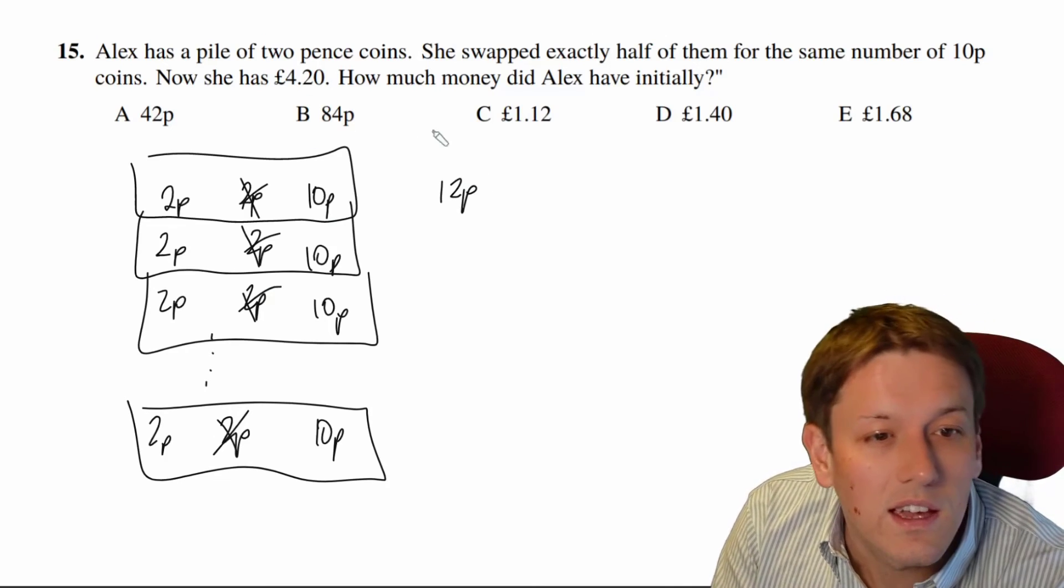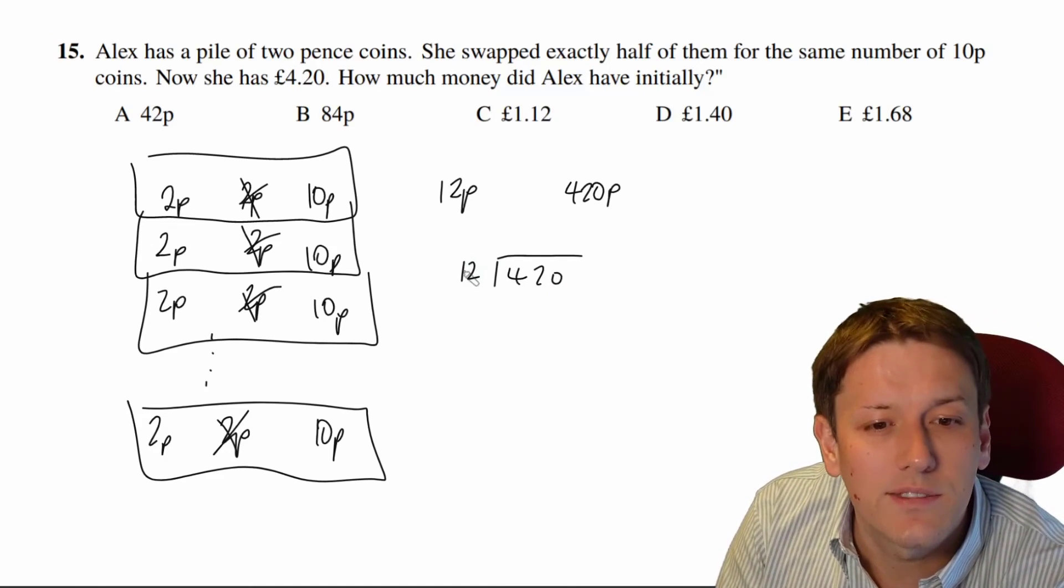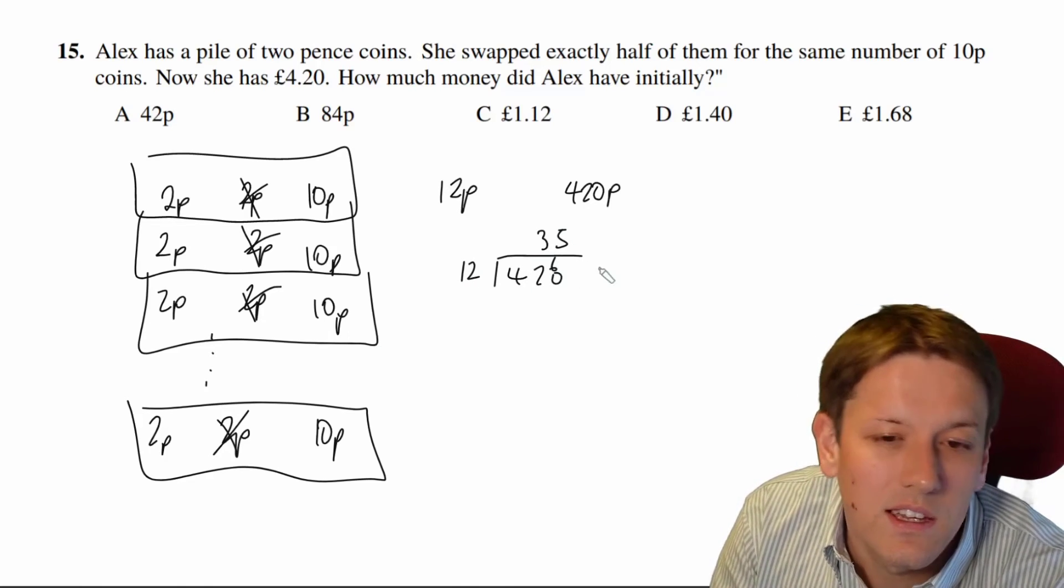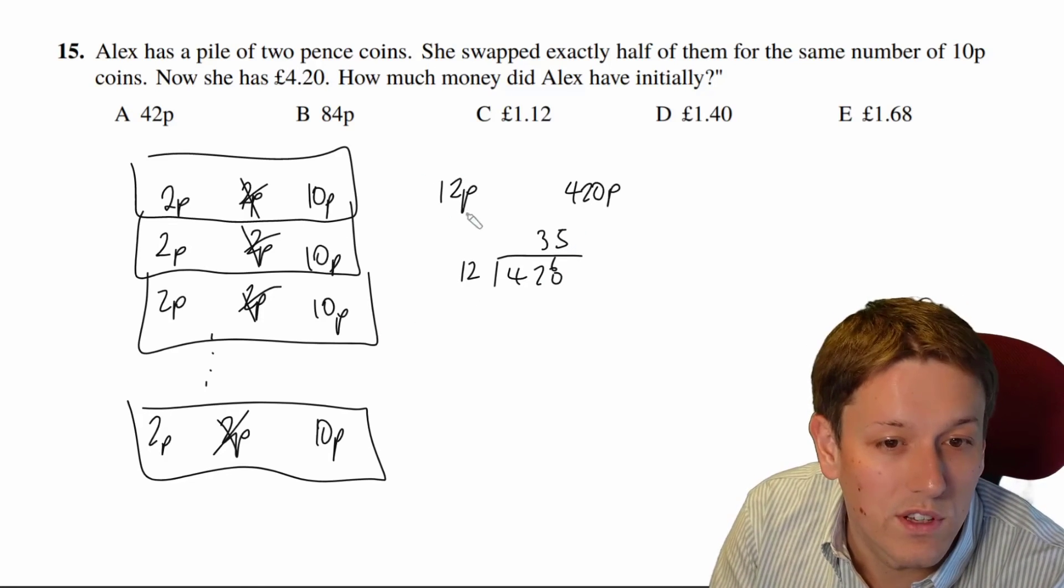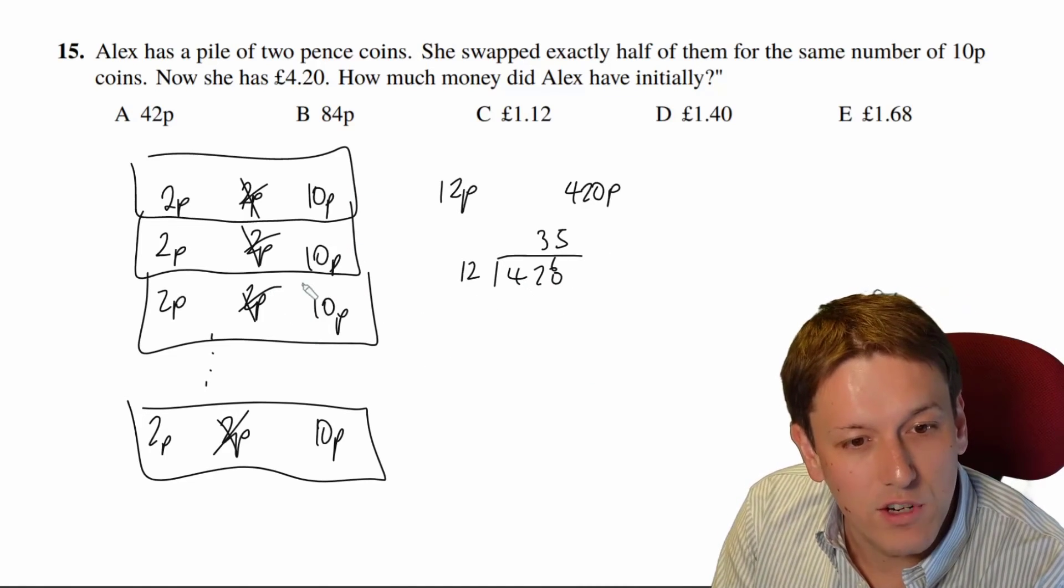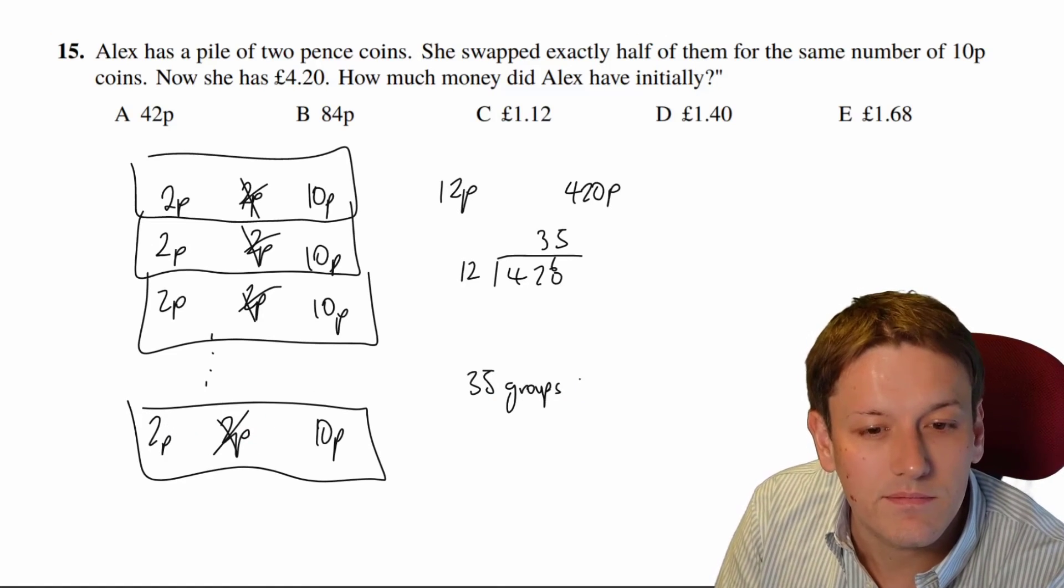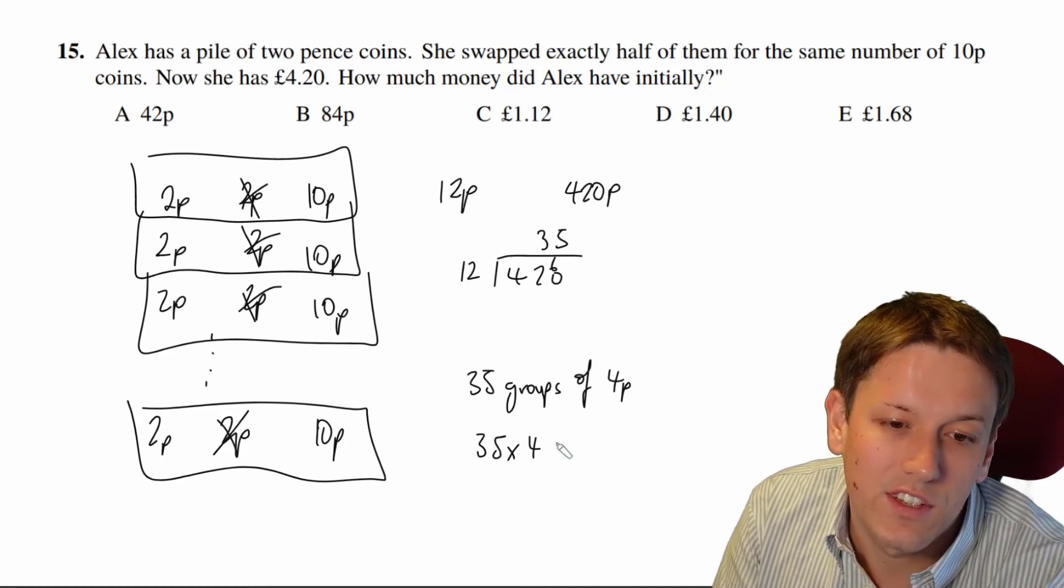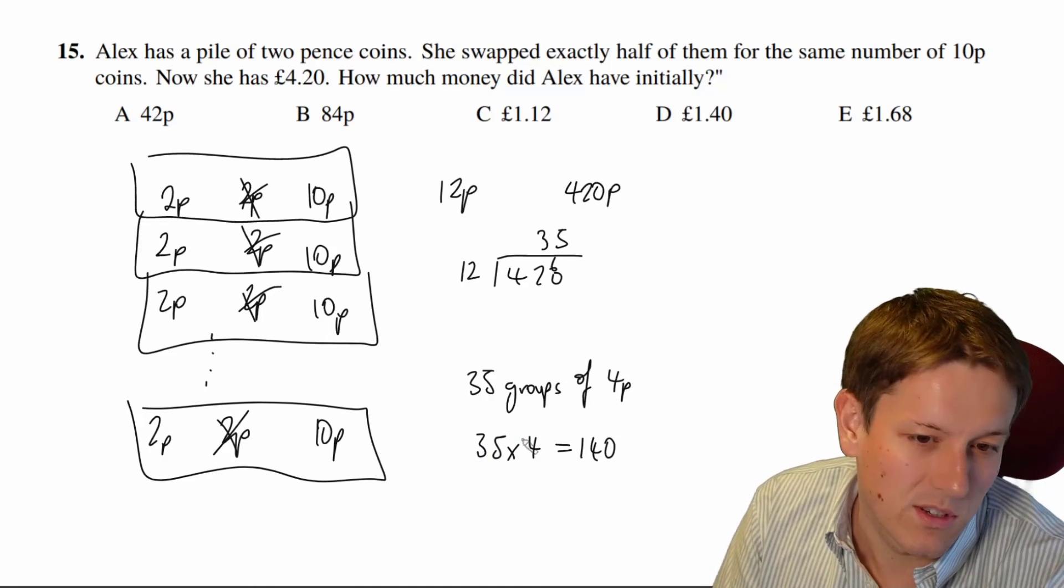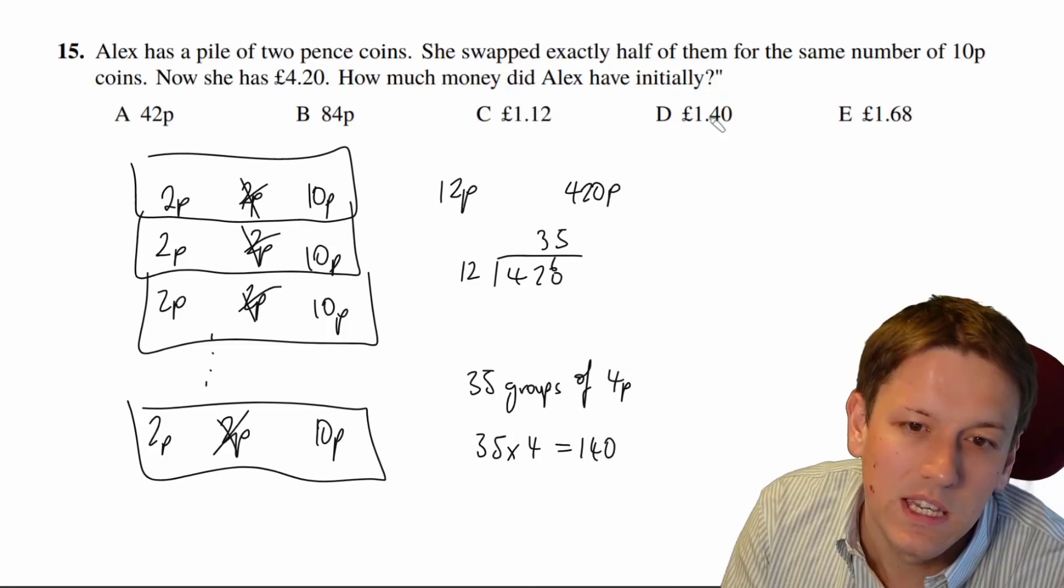Well each group is 12p and she's got £4.20 which is 420p so if I can do 420 divided by 12. 12 times 3 is 36, 6 left over, 12 times 5 is 60, there must be 35 groups of 12p here. 12 times 35 is 420. So initially she didn't have 35 groups of 12p, she had 35 groups of a 2p and a 2p, so 35 groups of 4p and then 35 times 4 is 140. Work that out however you want, 35 times 2 is 70 times 2 is 140 or however you want to work it out. 140p is £1.40 and so the answer here is D.